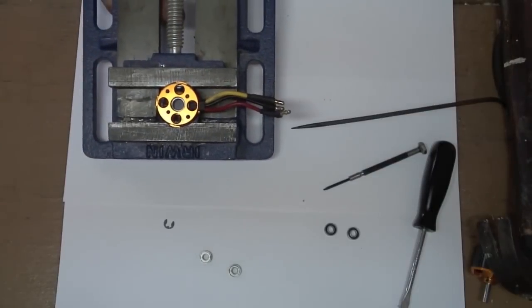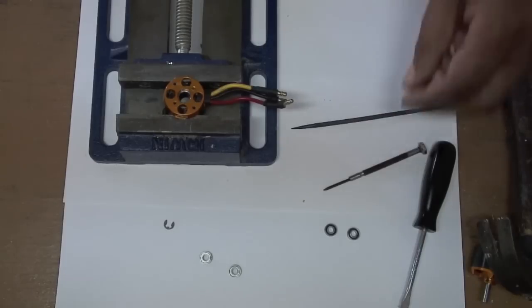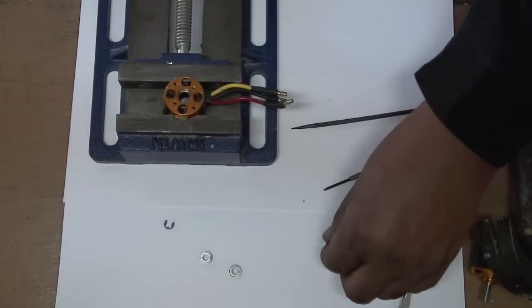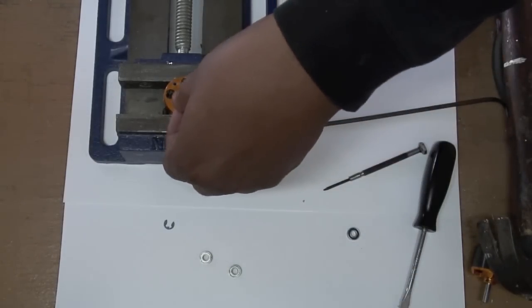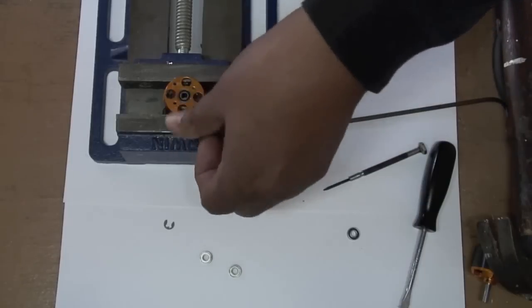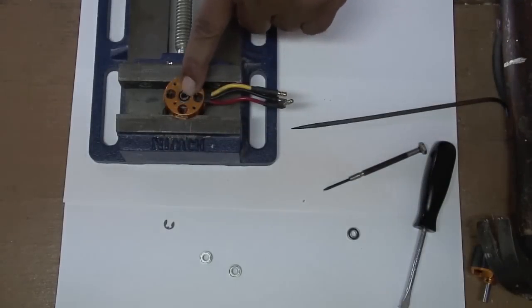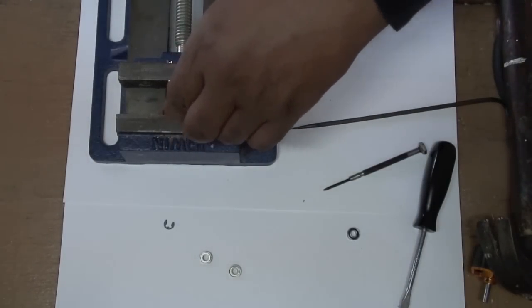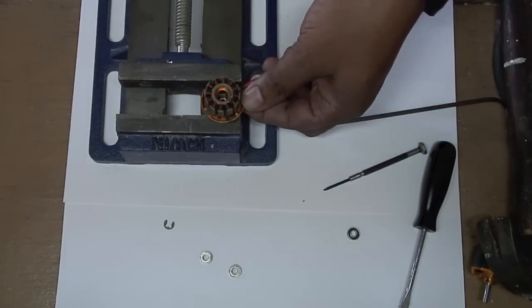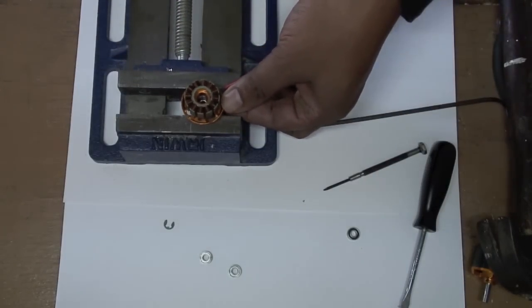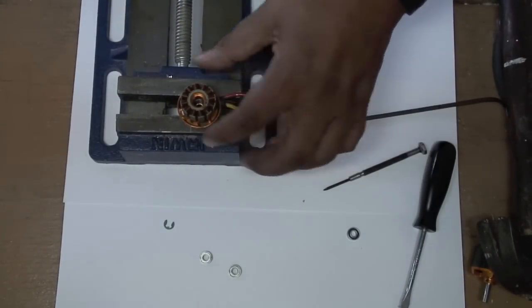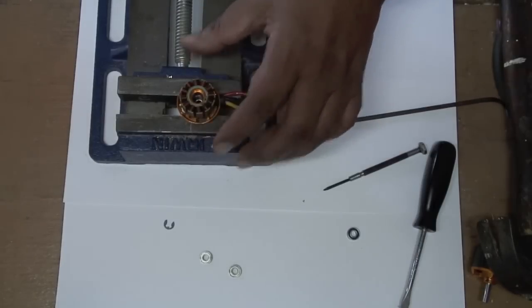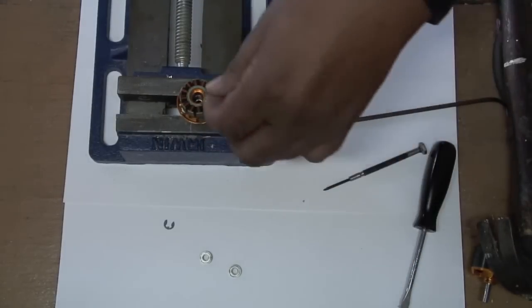Now, while I have it in this position, on this particular motor, the housing is a little bit oversized, so the bearing fits in fairly easily. I remove it from the vise, flip it over, and I take the new bearing and sit it here.